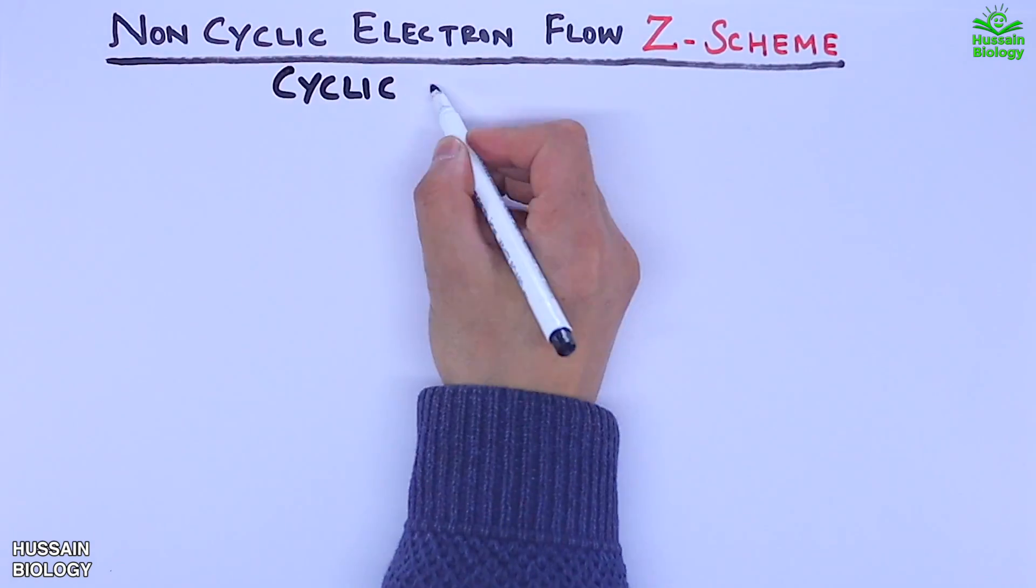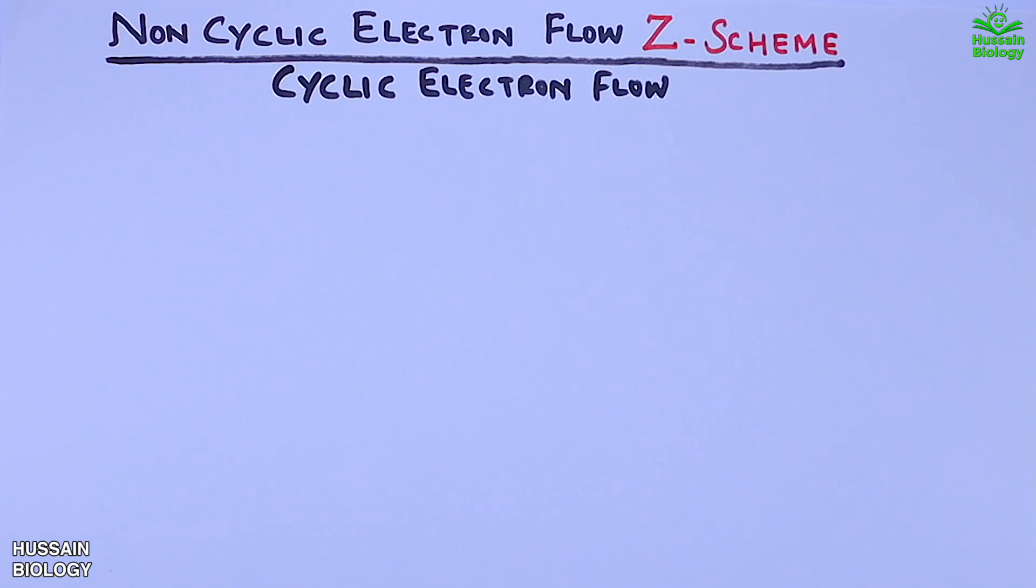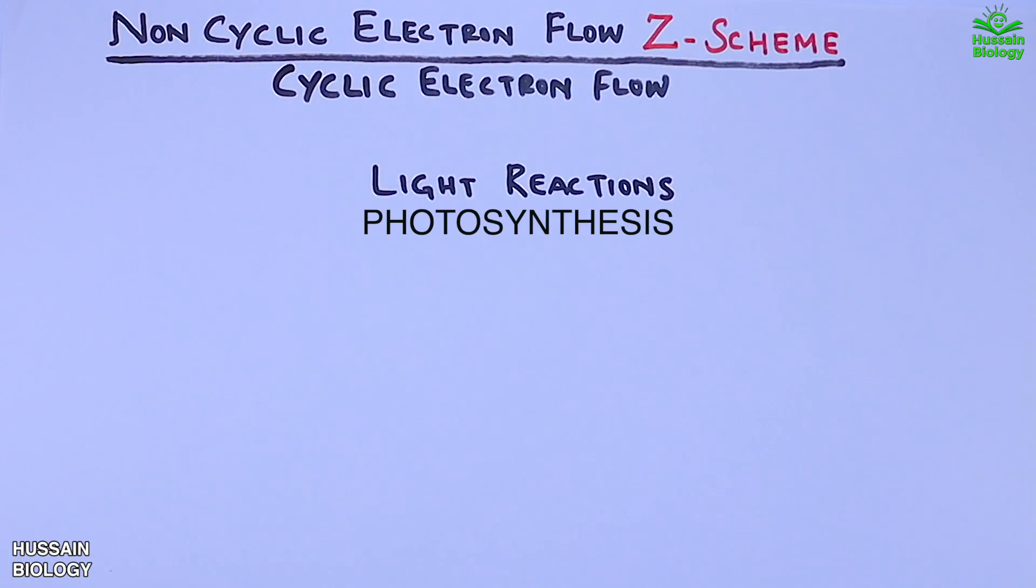In this video we will be discussing the non-cyclic electron flow in Z-scheme form and we also will be discussing the cyclic electron flow briefly. Both non-cyclic and cyclic electron flow occur in light-dependent reactions of photosynthesis.